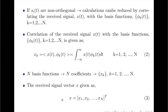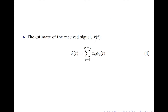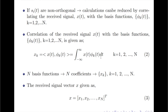The vector of such correlation outputs is defined as the received signal vector X, given by X equals [X1, X2, ..., X_N] transpose. Here X represents the received signal vector and each element is the output of one of the correlators. Now that we have computed the correlator outputs, we can compute the estimate of the received signal, represented as X-hat of t, using the equation X-hat of t equals the summation for k from 1 to N of X_k times phi_k of t. A receiver that performs these operations is called a correlation receiver.